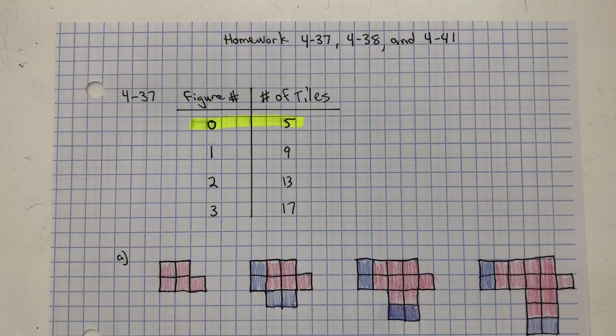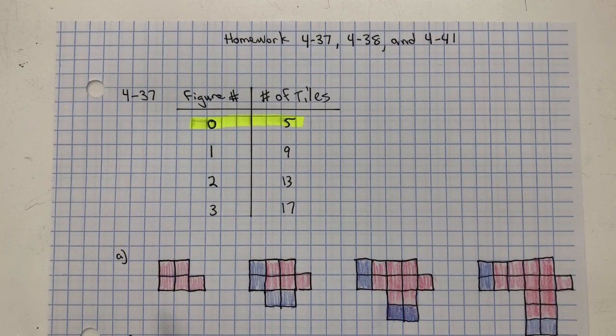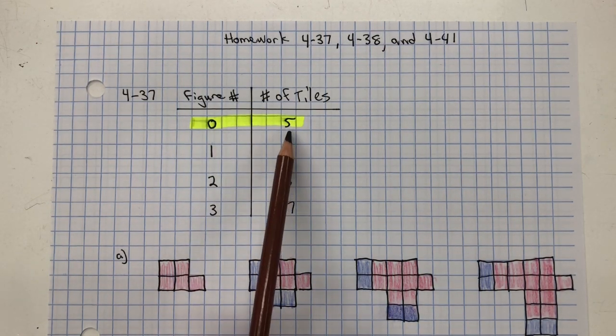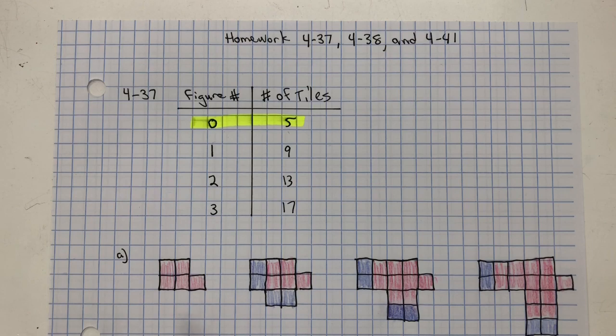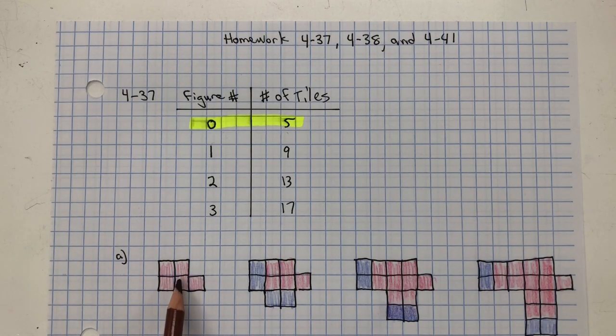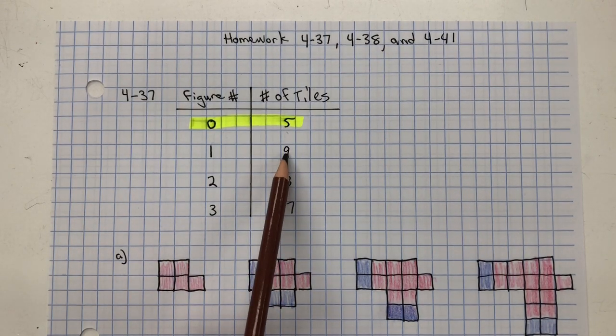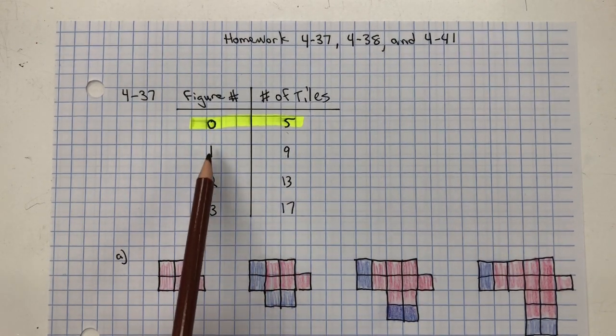For your tile pattern, most likely it will be different than mine, but what you want to understand is your initial value, figure zero, what you start with. Figure zero is going to have five tiles, and from there you can see that you're adding four tiles for every figure number.